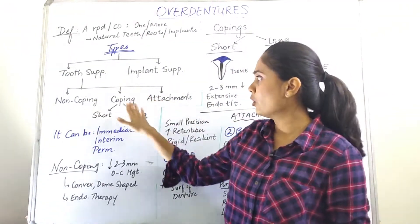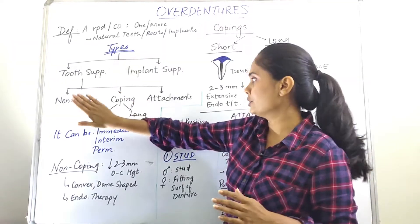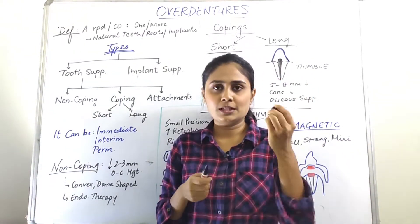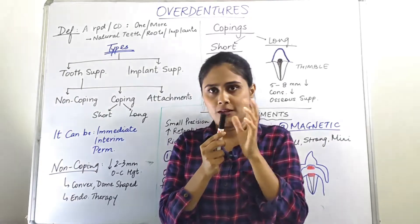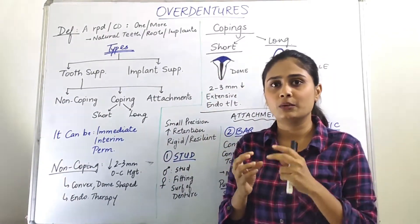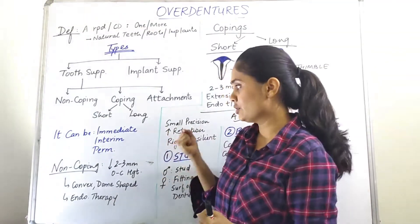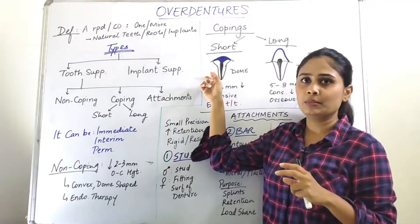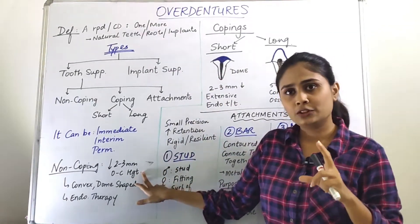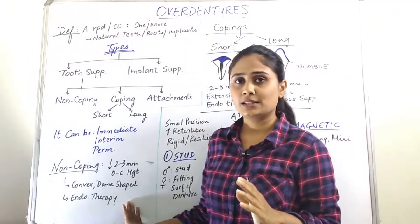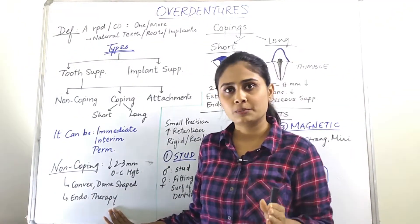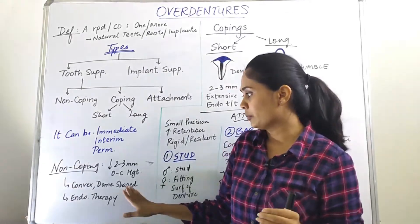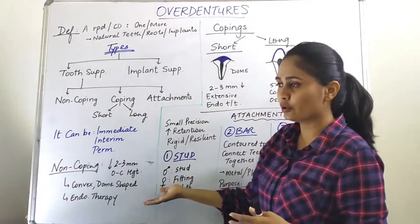First we will take up tooth-supported overdentures and look at the non-coping type. Coping means covering — like the cap of a pen. In non-coping type, we need a retentive unit for retention and support. The occlusal-cervical length of the tooth is reduced by two to three mm. In these cases, we expect the patient to undergo endodontic treatment for that abutment, and the shape of the abutment will be a convex dome shape.